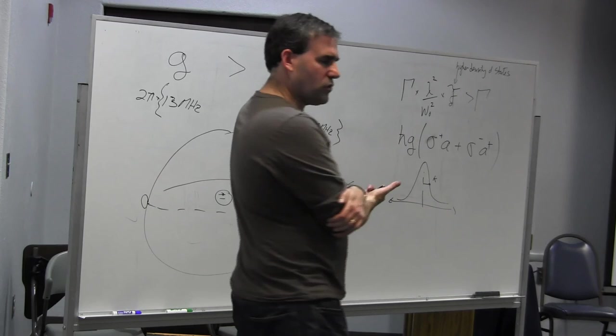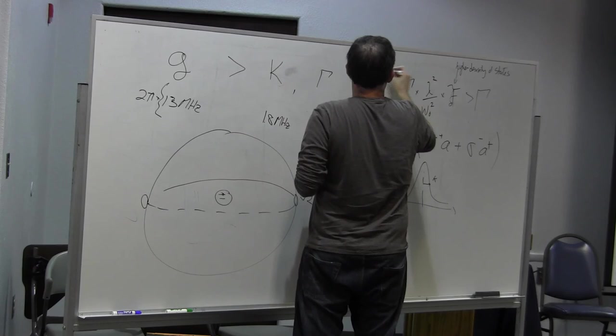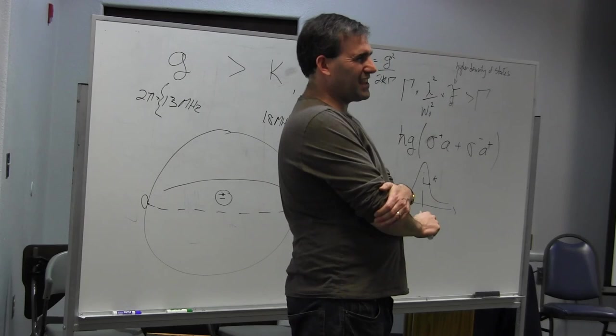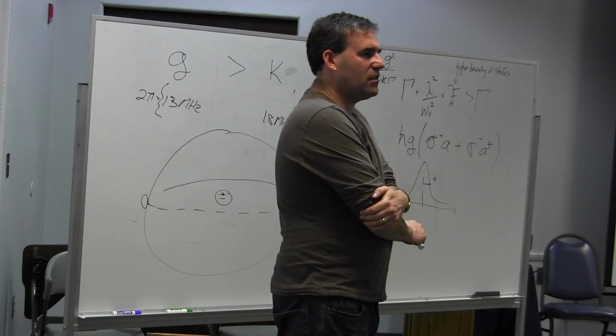This cooperativity, which is the cavity QED cooperativity, which I guess is g squared over kappa times gamma. You know, this thing is like ten, fifty, I don't know, a hundred. But it's not really big. So if you think that that sort of quantifies how many operations I can do before things go bad, or maybe the square root of it is what quantifies it sometimes. That's not a really impressive number.